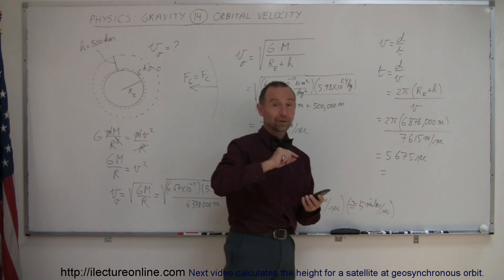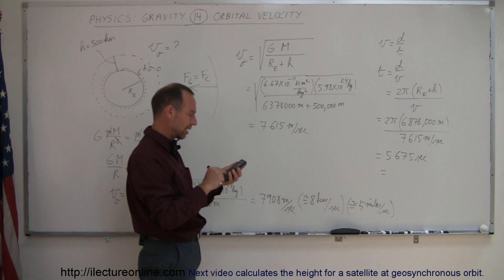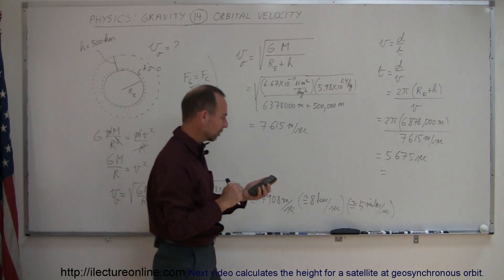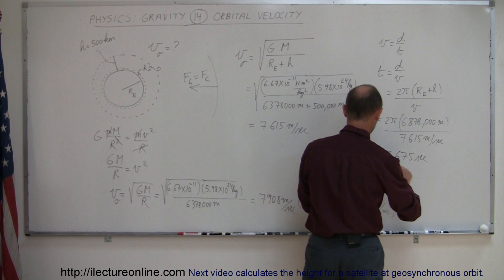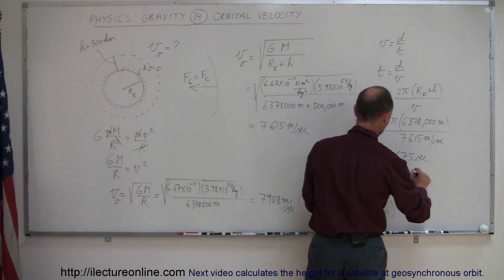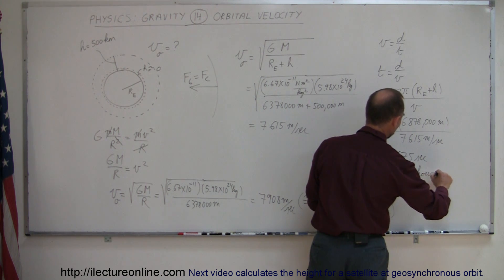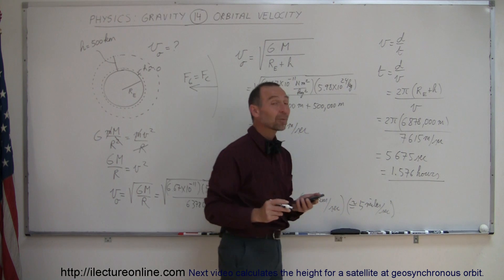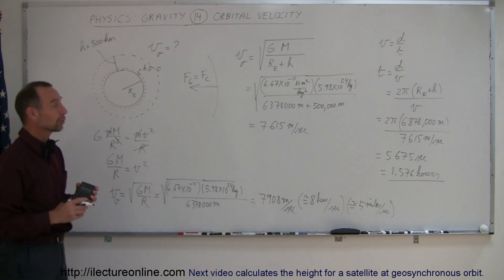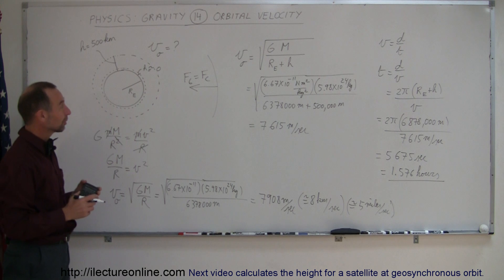Converting that to hours, because it makes a lot more sense that way, divided by 3,600, and that would be 1.576 hours. A little bit more than one and a half hours, a little bit more than 90 minutes for a satellite to make it around the Earth just once. That's pretty amazing.